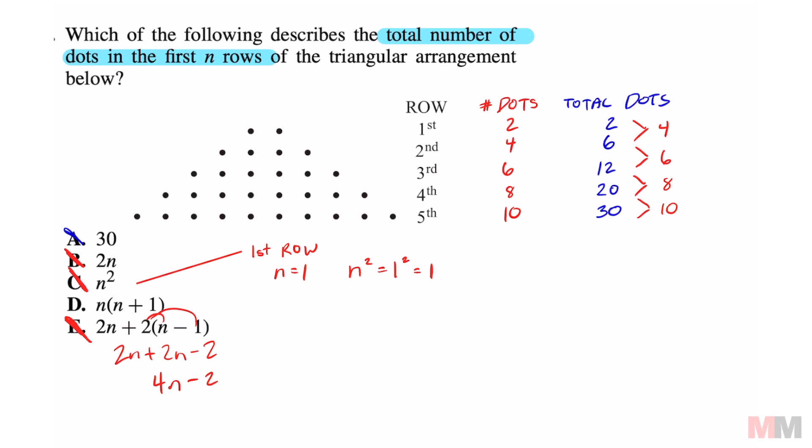Meaning by deduction, D is going to be the right answer. If I simplify that expression, that's going to be n² + n. You can test it out. Let's say we test out the third row. That means n is going to equal 3.